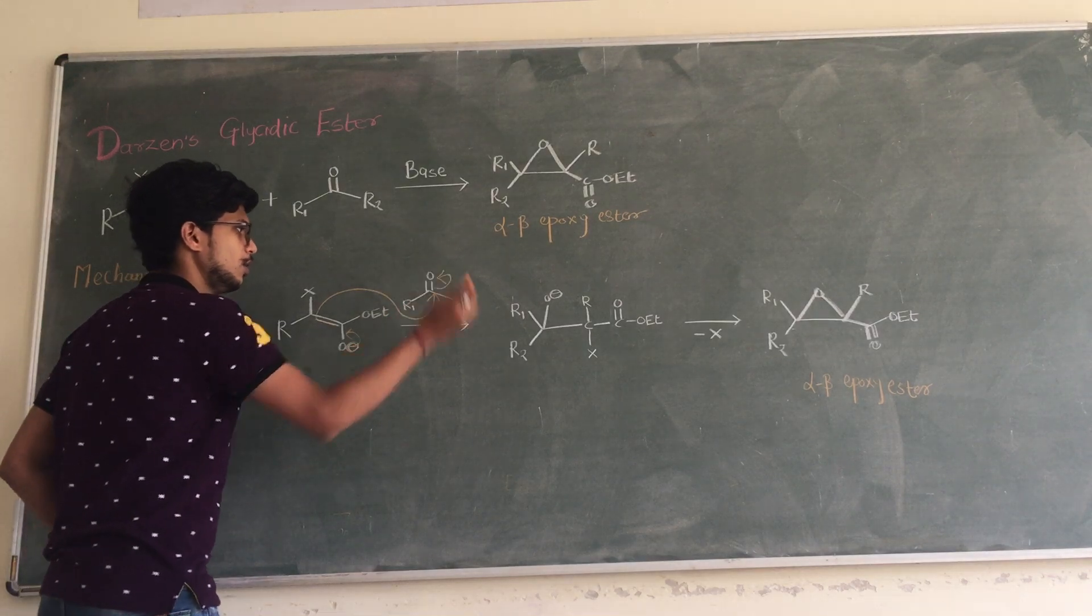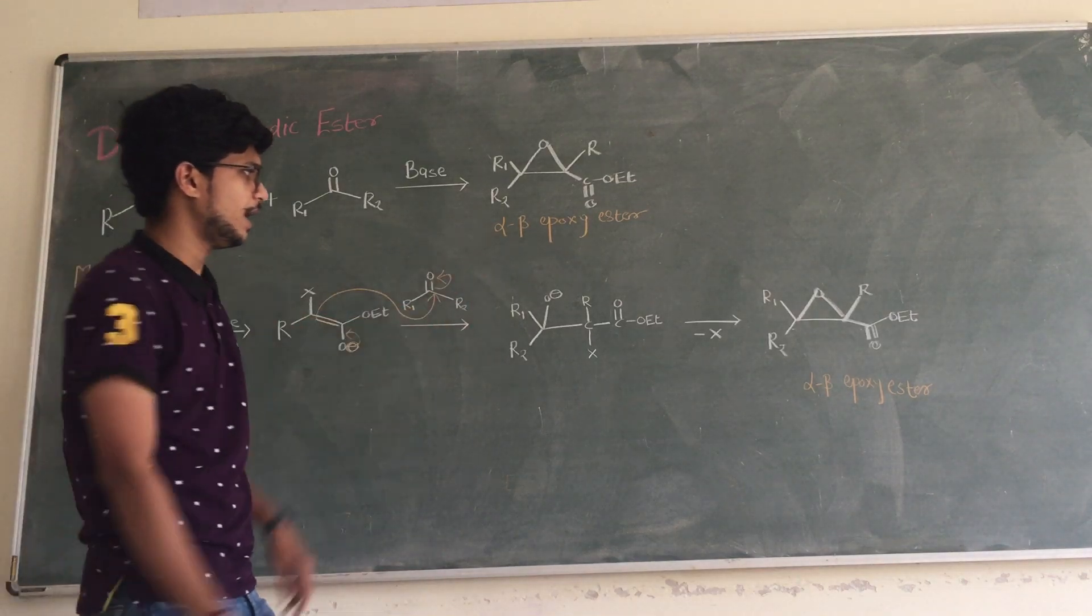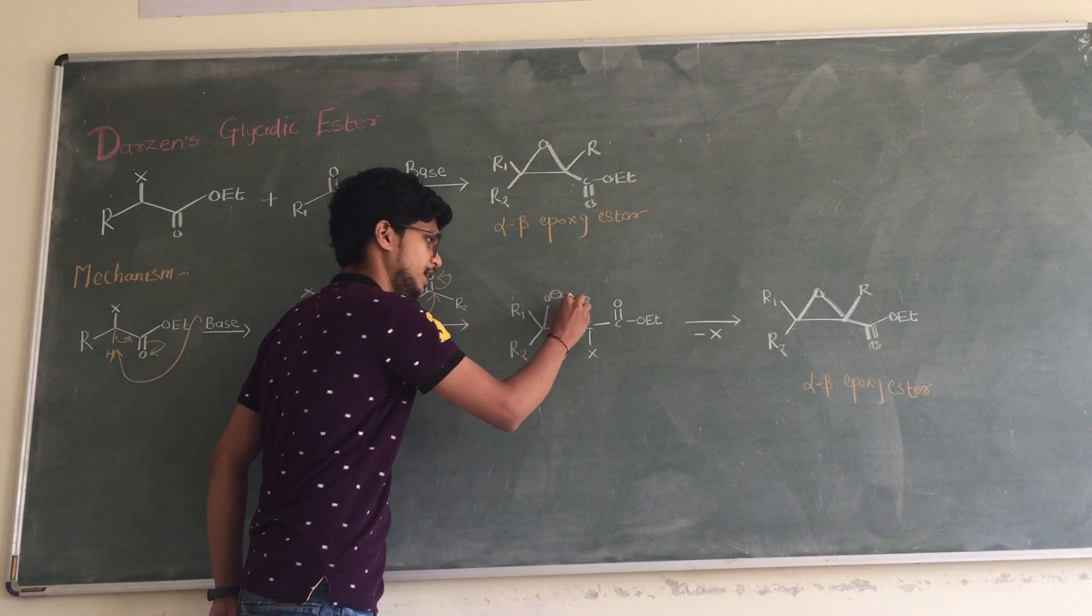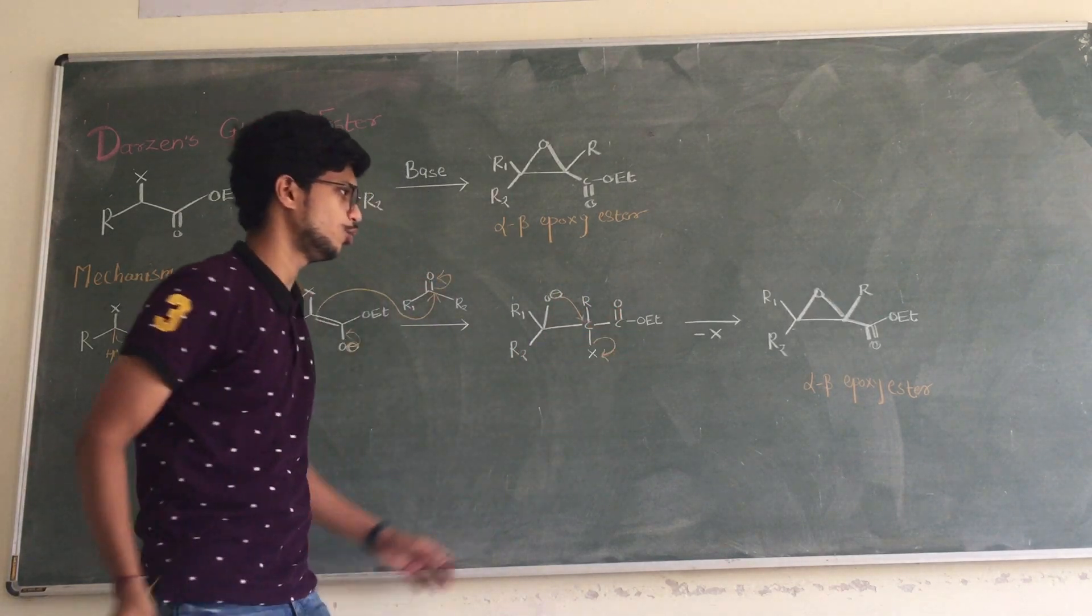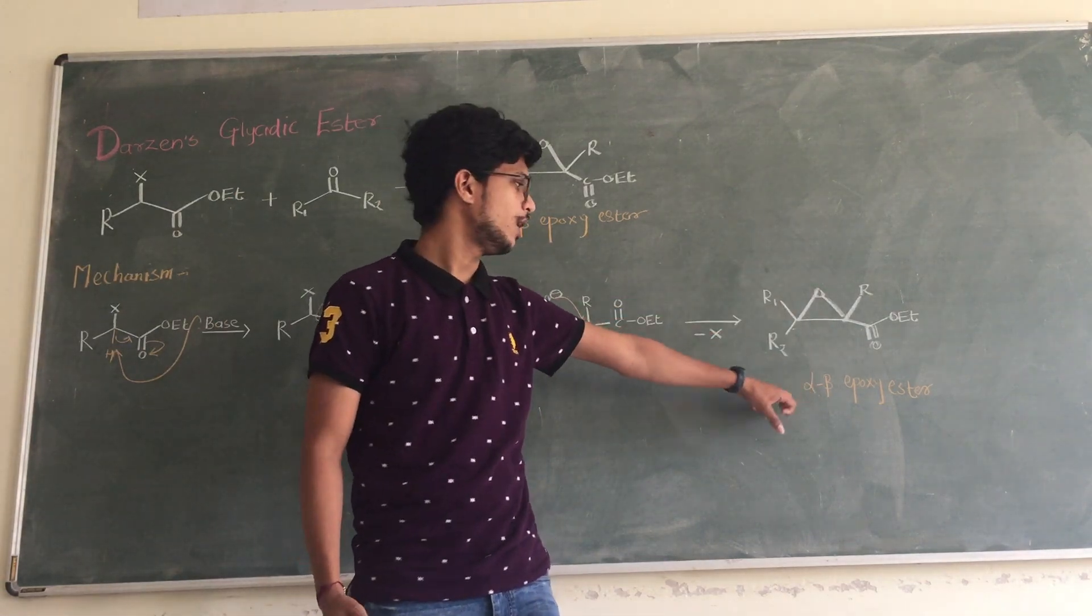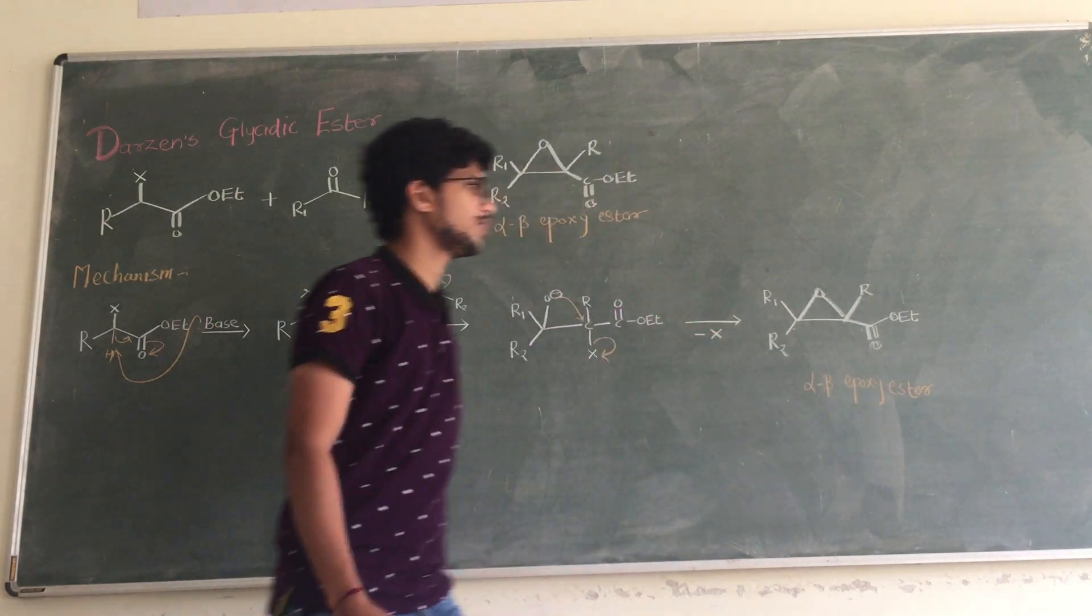The double bond attack takes place on the carbonyl carbon, forming C-O minus. Then this O minus attacks on this carbon and removal of the halogen group occurs, leading to the formation of alpha-beta epoxide ester.